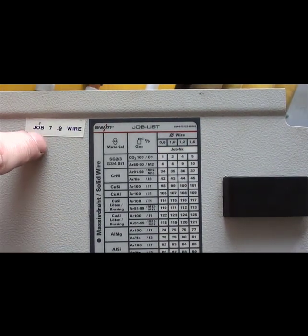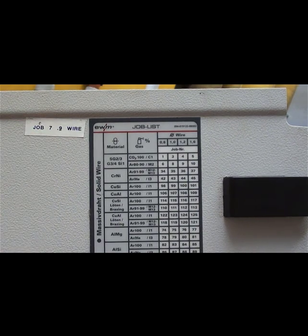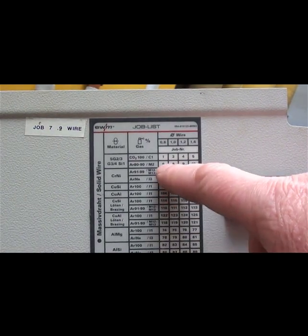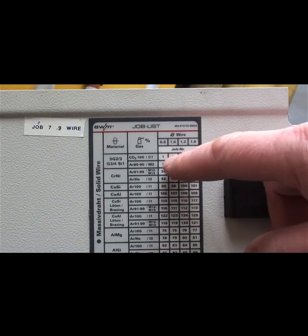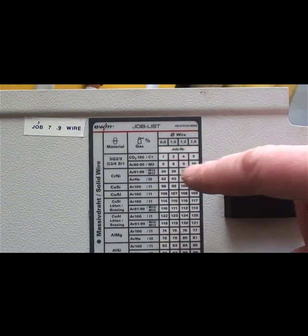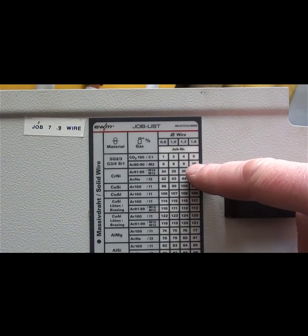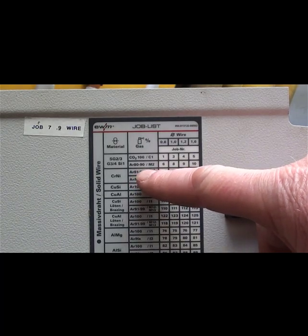Over here you can see that job number 7 is 0.9mm. So job 7 fits between 6 and 8. The top line 1, 2, 3, 4, 5 are running on CO2. The next line down 6, 7, 8, 9, 10 are running on Argo Shield.